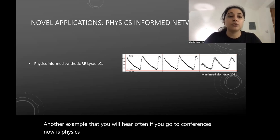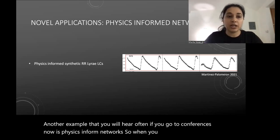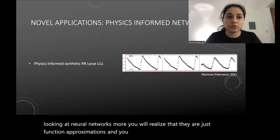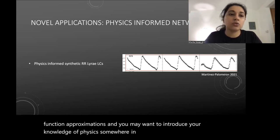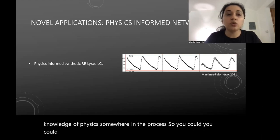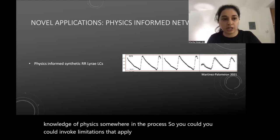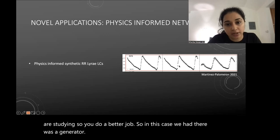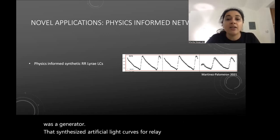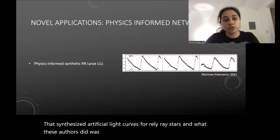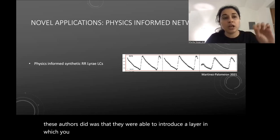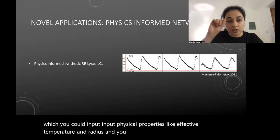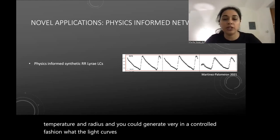Another application you'll hear about at conferences is physics-informed networks. Neural networks are just function approximators, and you may want to introduce your physics knowledge into the process — invoking known physical constraints on the system being studied. In one example, a generator synthesized artificial light curves for RR Lyrae stars: the authors produced a layer where you could input physical properties like effective temperature and radius, and generate light curves in a controlled fashion for those properties.